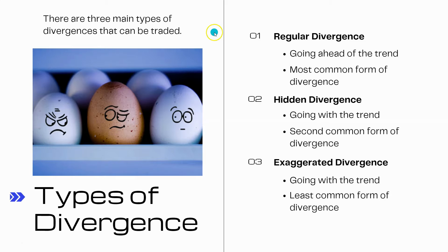There are three main types of divergences that can be traded. I want to interject here and say that these divergences do not guarantee the projected outcome they signal. There's no free lunch in the market, no holy grail — divergences are no different. We must always filter divergence signals with other technical indicators and analysis tools. We have three different types: regular divergence, hidden divergence, and exaggerated divergence.